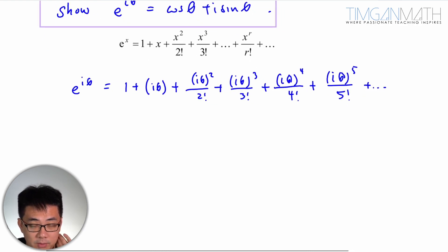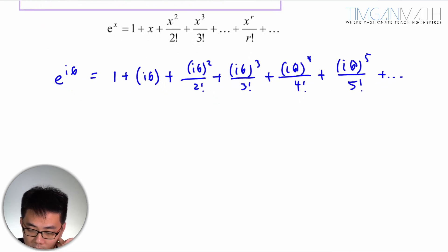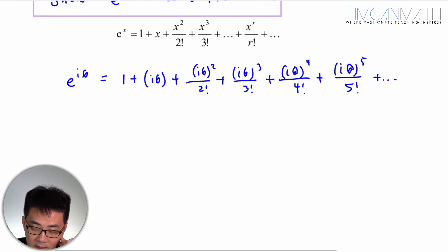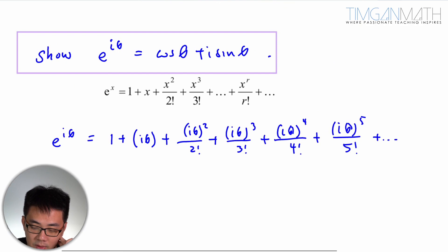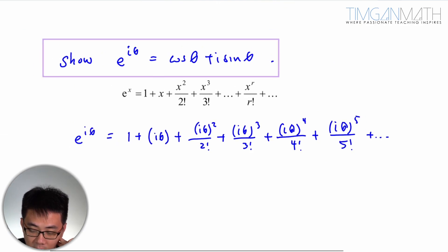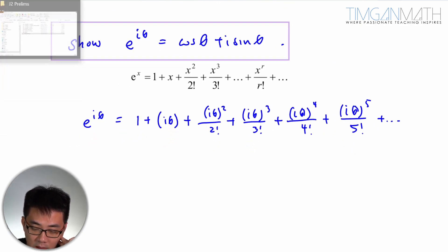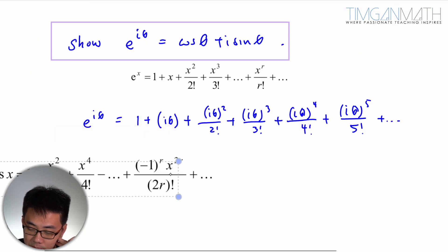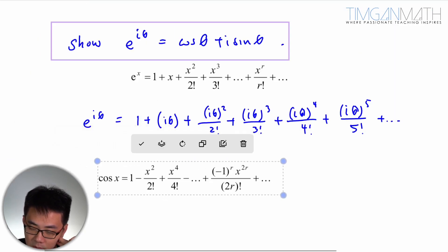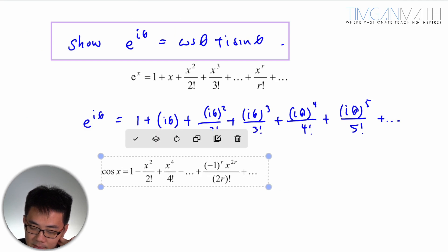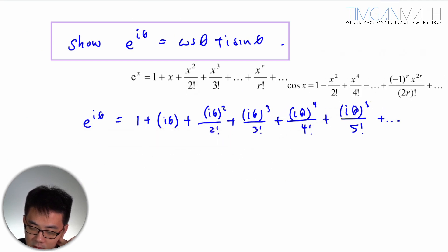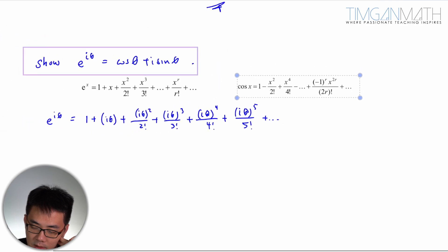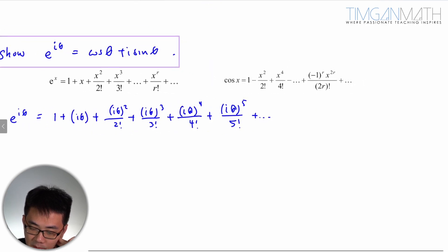What you should try and see is that in this case here, because you want cosine θ and i sine θ, right? So what I'm going to do is actually just bring up the standard series for cosine and sine. So this is cosine here, maybe we're going to assign sine as well.